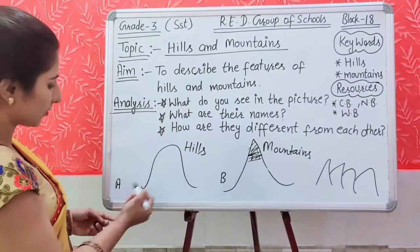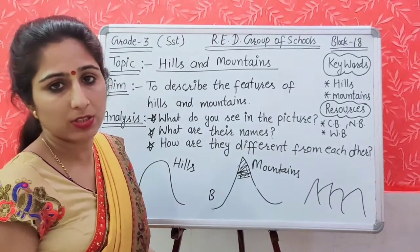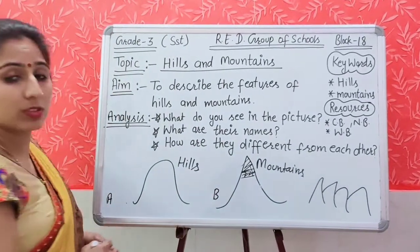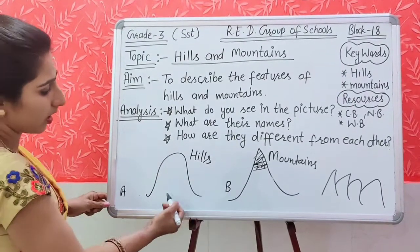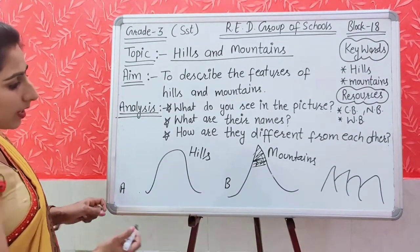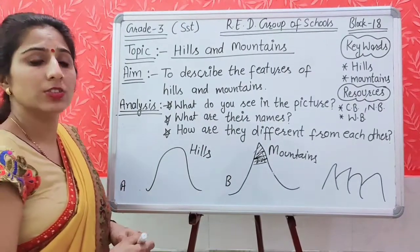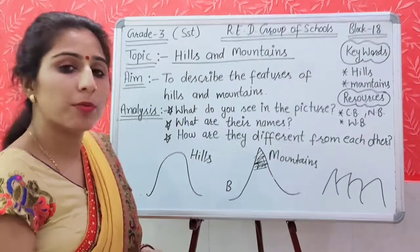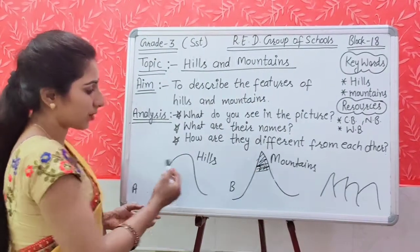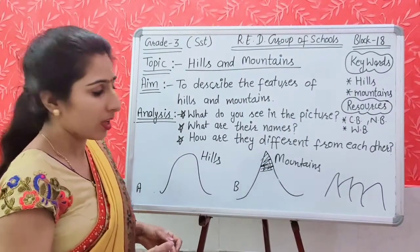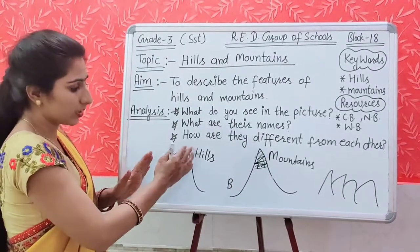Their names are hills and mountains. How are they different from each other? You can find the differences easily. The mountains are higher than the hills. The slope of the hills is gentle and the slope of the mountains is steep. The peak of the mountains is sharper than that of the hills.